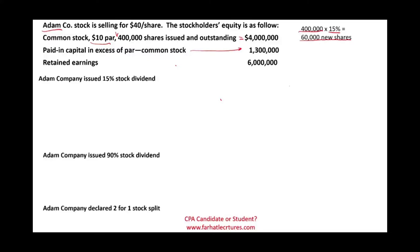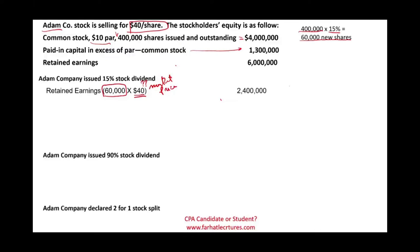Now we need to journalize this dividend. How much do we debit retained earnings? Retained earnings is the account that dividends come out of, so it is going to be reduced. For a small stock dividend, we use the market value per share — we take the 60,000 new shares and multiply by $40, the market price, which gives us a debit to retained earnings of $2.4 million.